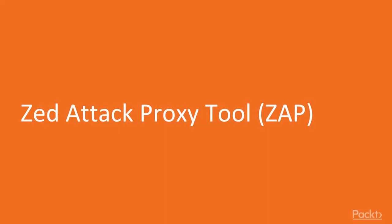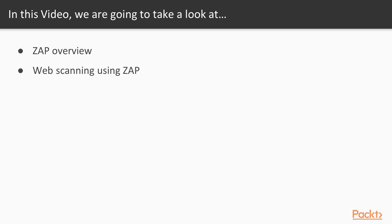In this video we are going to look at a couple of points. First, we will learn about what ZAP is, and then I will show you how you can scan a website using OWASP ZAP, also called Z Attack Proxy, inside the Kali Linux operating system.